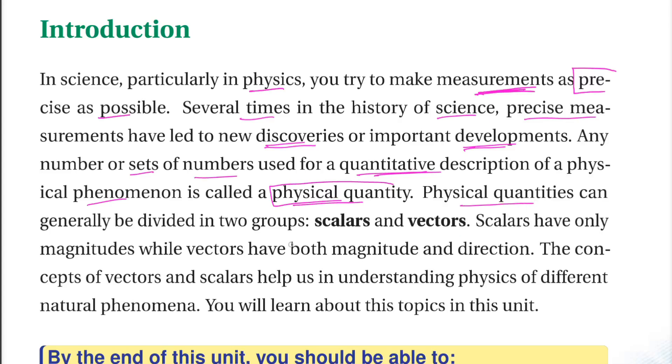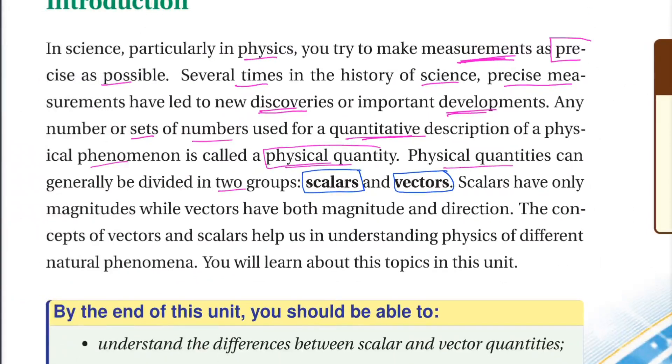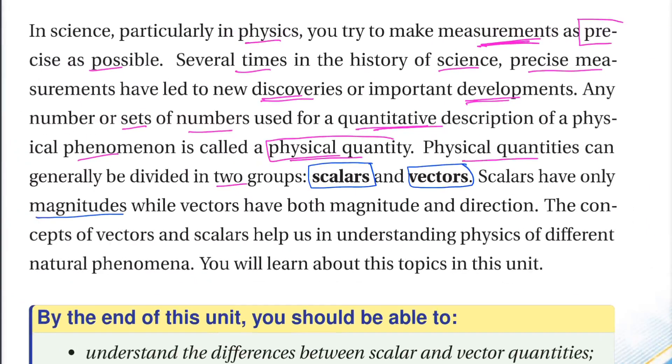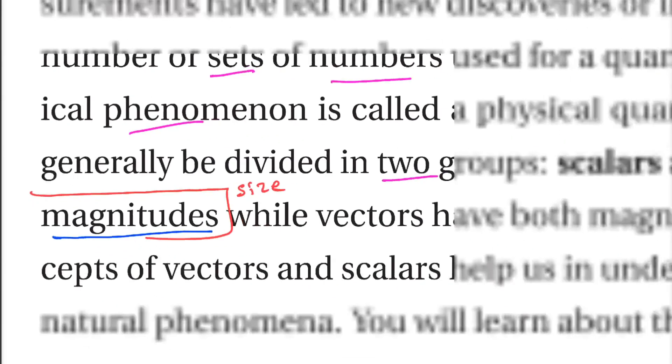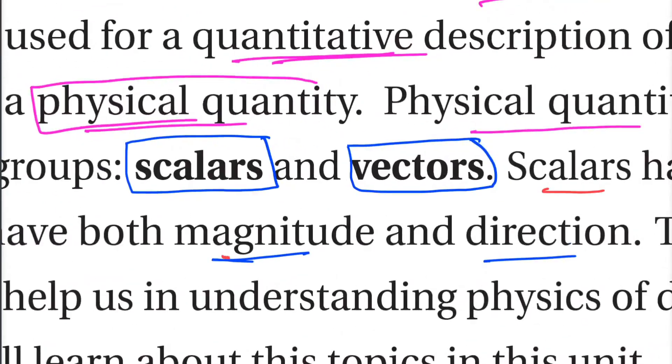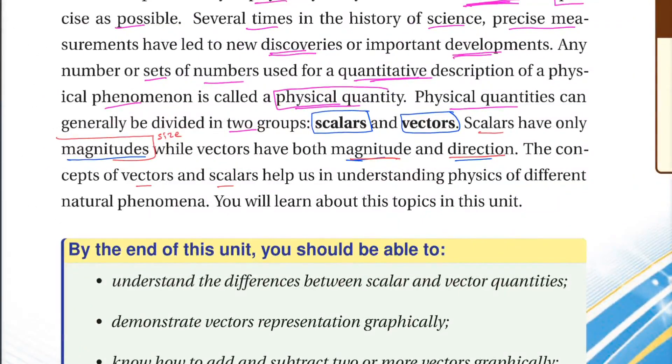Physical quantities in general get divided into two groups: scalars and vectors. Scalars have only magnitudes, while vectors have both magnitude and direction. Scalar is called magnitude, magnitude is called size. The concepts of vectors and scalars help us in understanding physics of different natural phenomena.